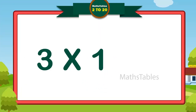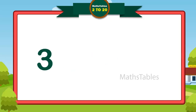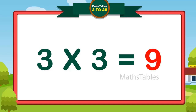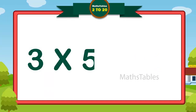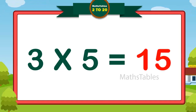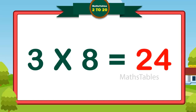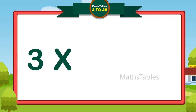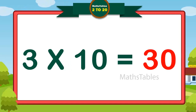3 ones are 3. 3 twos are 6. 3 threes are 9. 3 fours are 12. 3 fives are 15. 3 sixes are 18. 3 sevens are 21. 3 eights are 24. 3 nines are 27. 3 tens are 30.